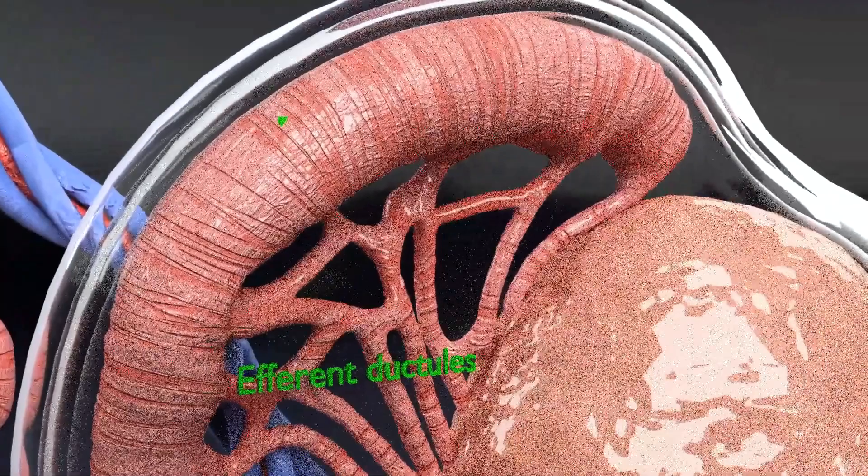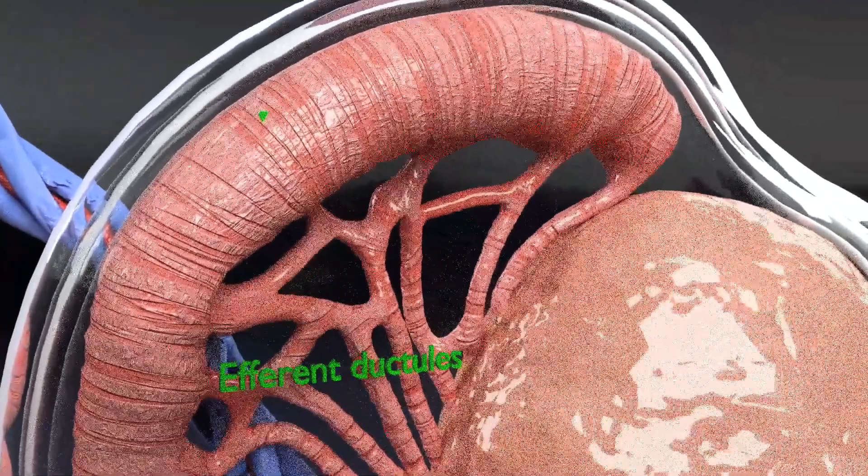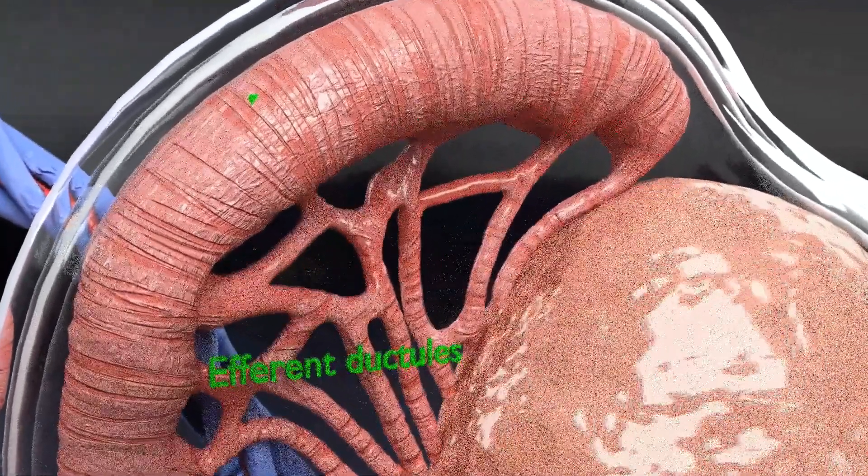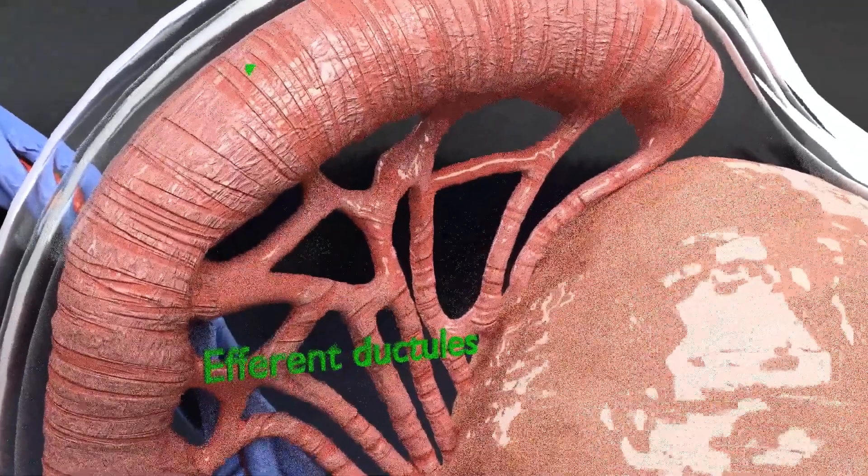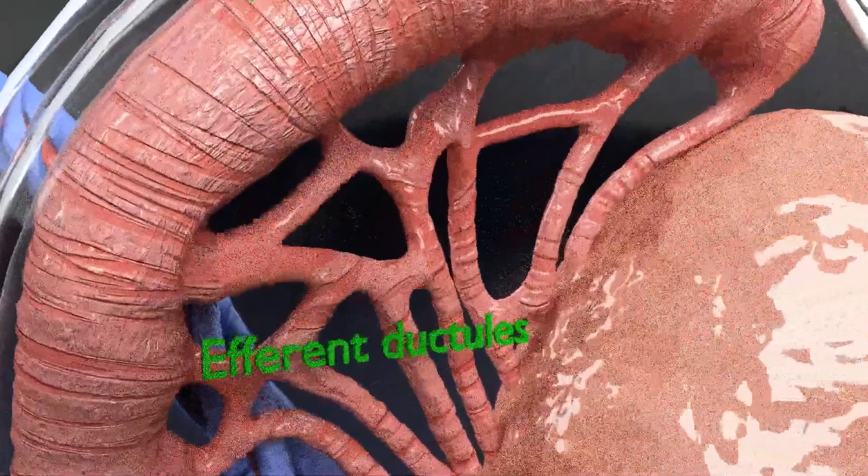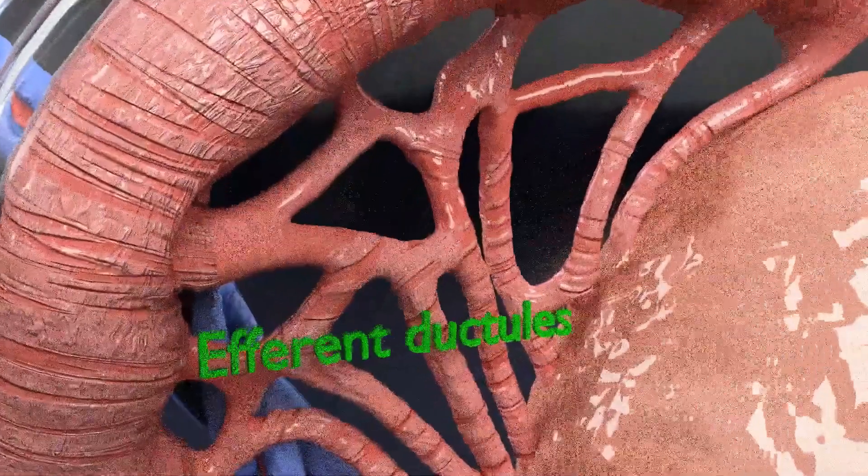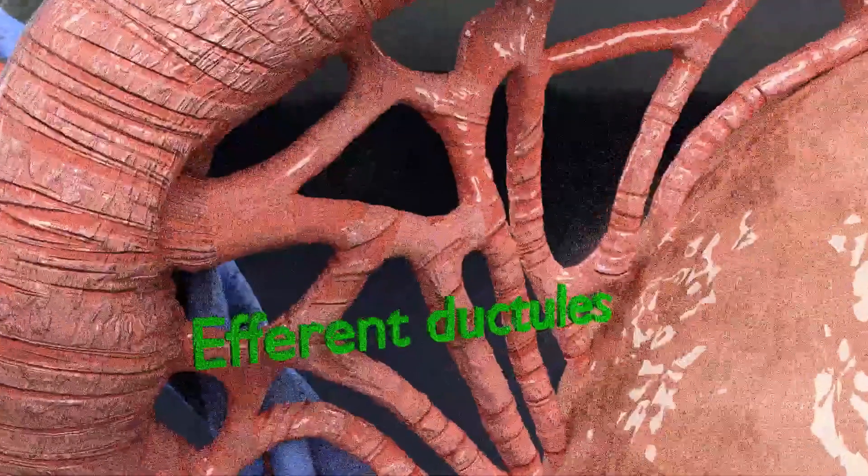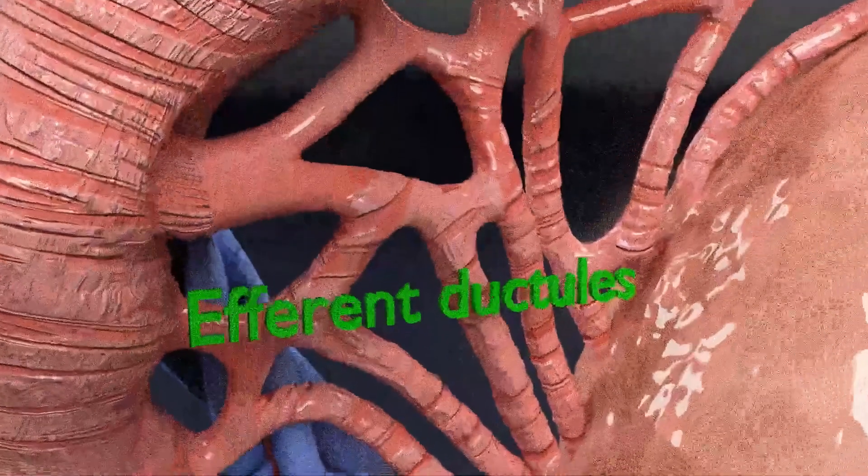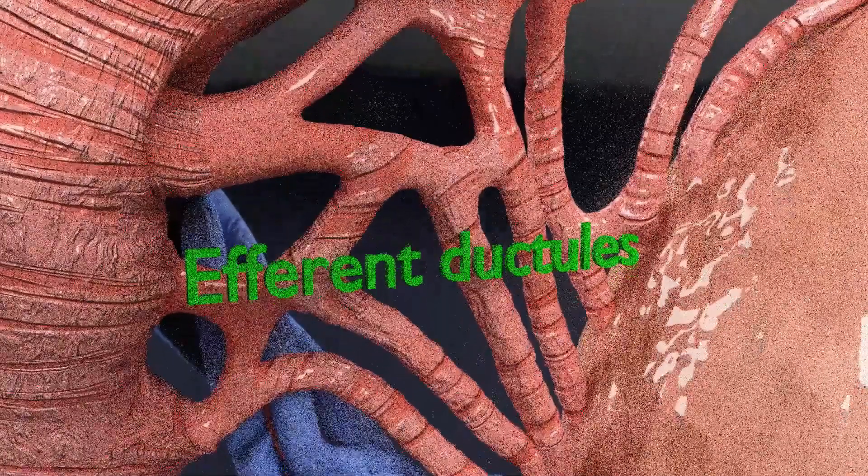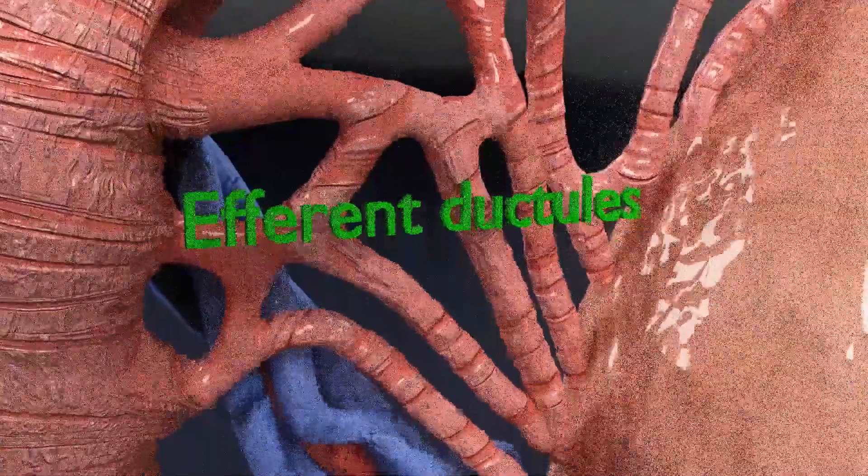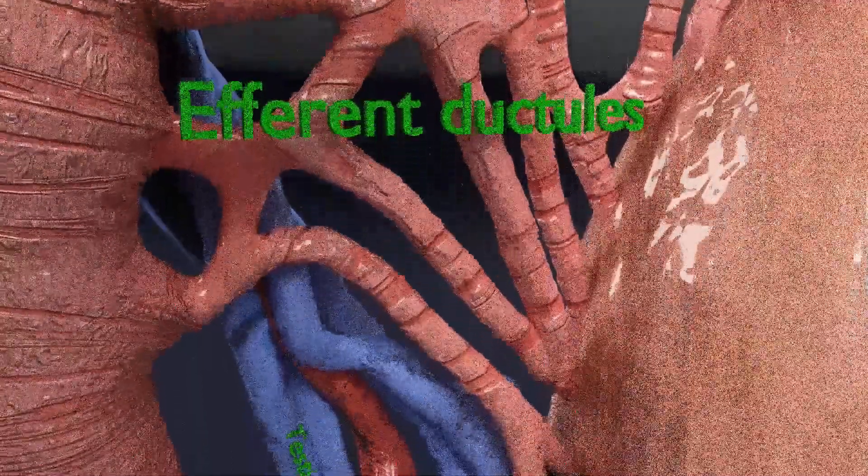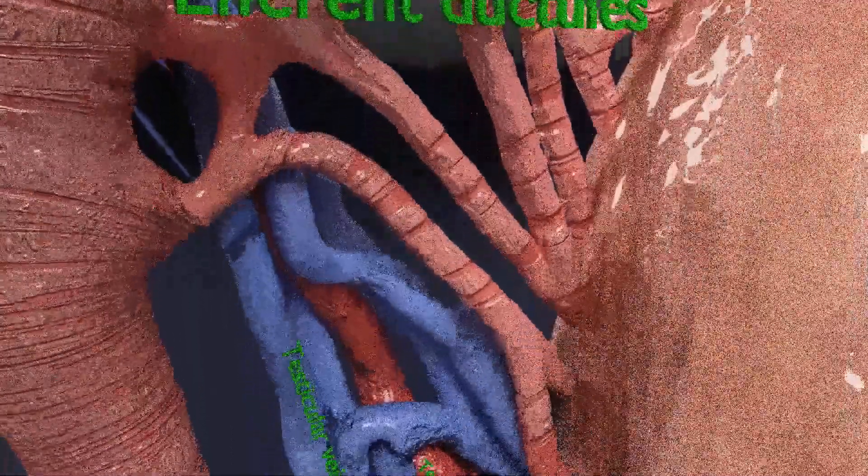Now you are able to see the efferent ductules which are a series of parallel thin delicate tubules that connect the ductus testes to a single tube the epididymis. The efferent ducts are often referred to as conduits because sperm travels so rapidly through the tubules into the epididymis.